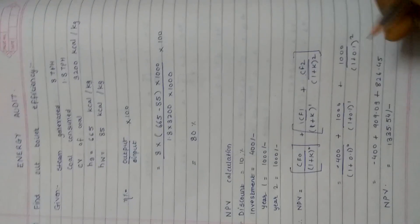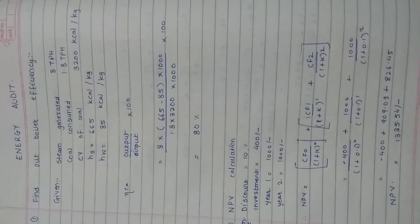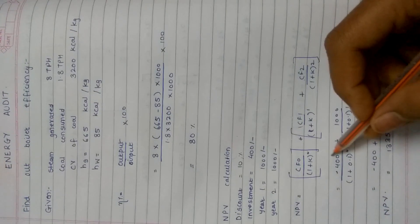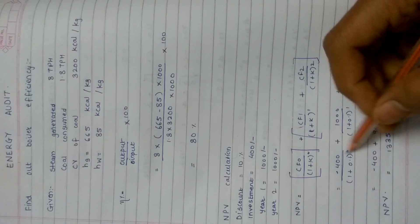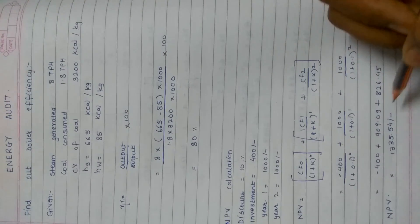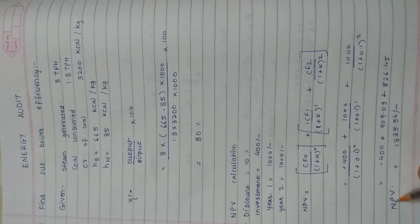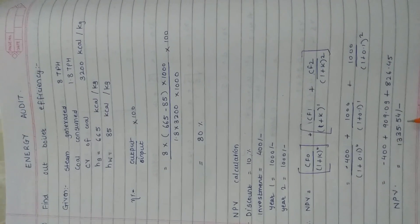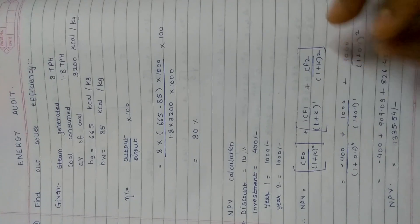Similarly you can calculate it for 3, 4, 5, 6, up to n numbers. Calculating term by term, we get three terms: minus 400 plus 909 plus 826. So the net present value is 1335.54 of the particular object.